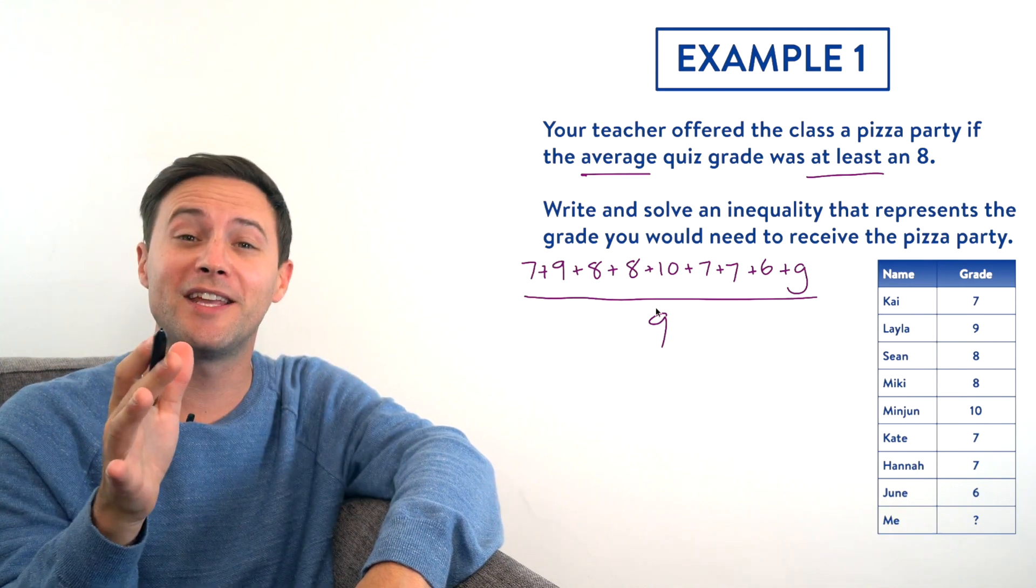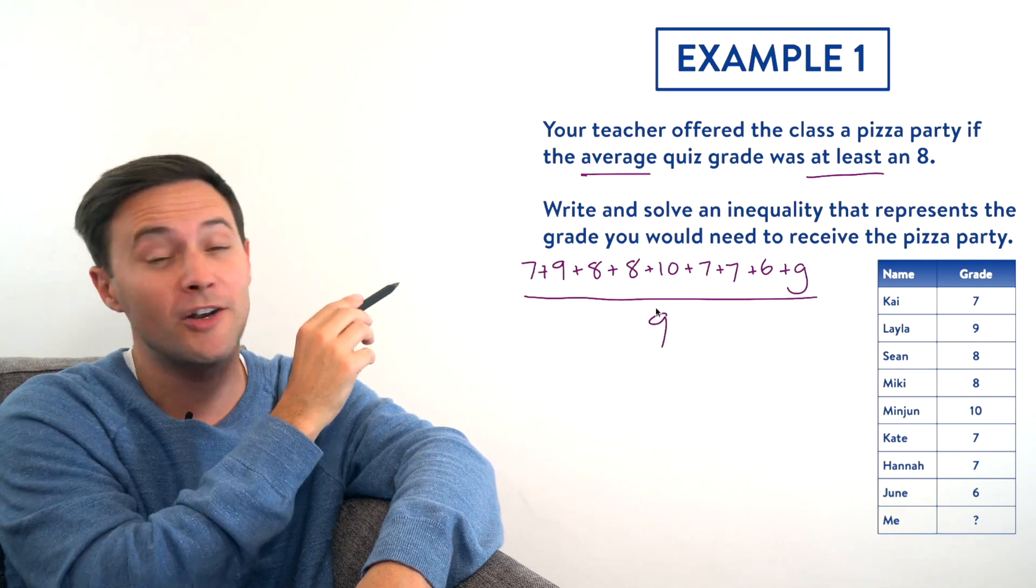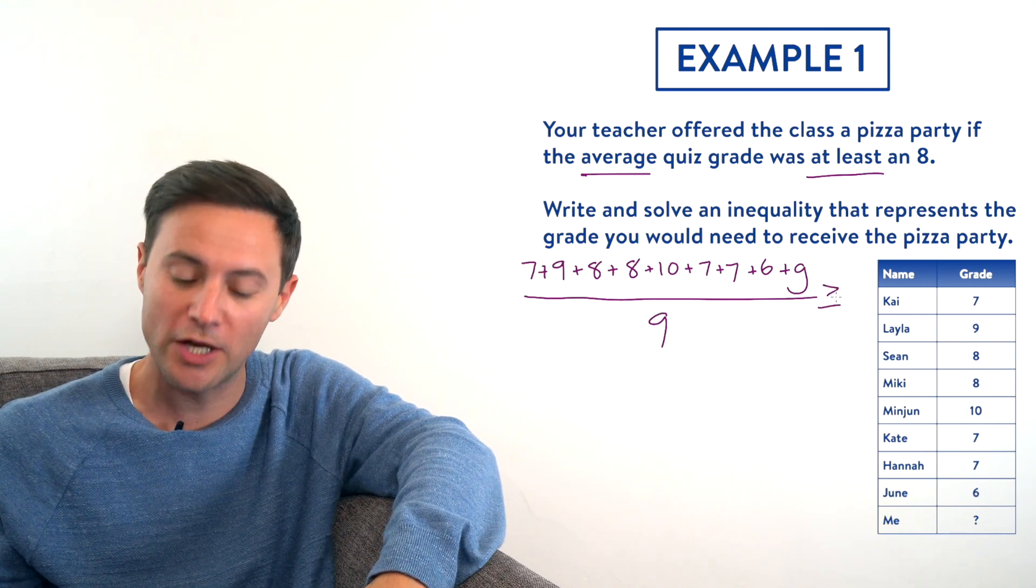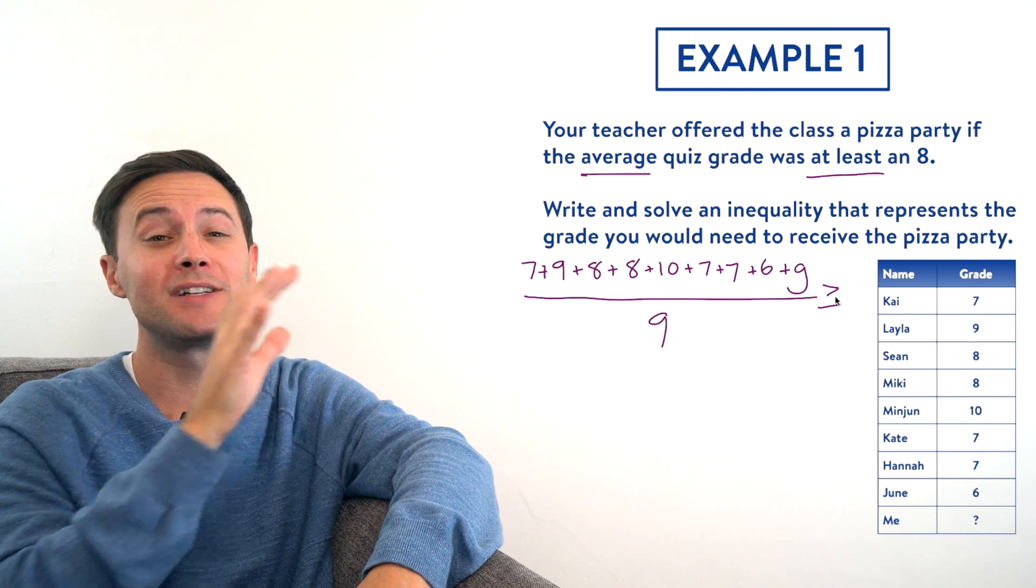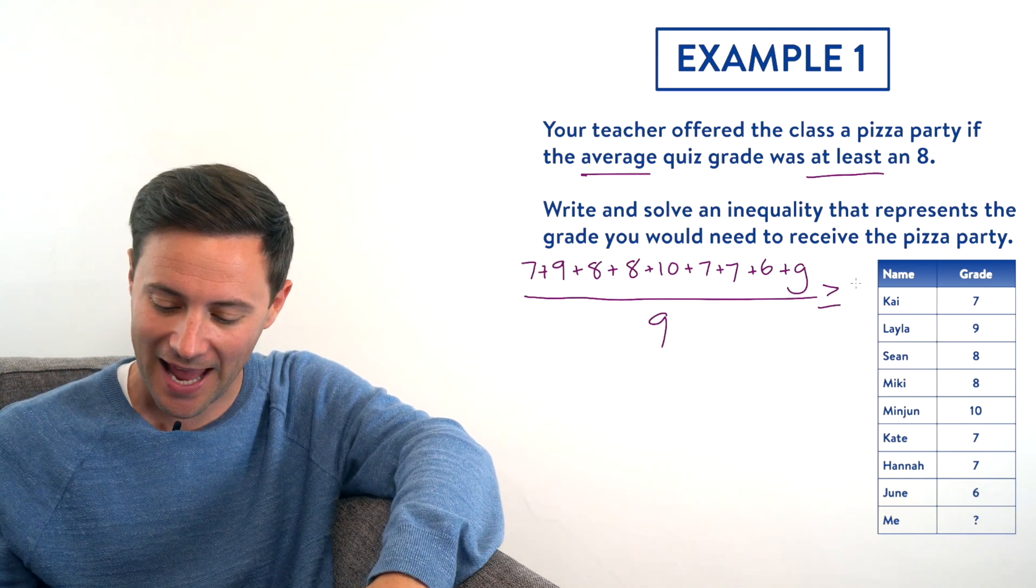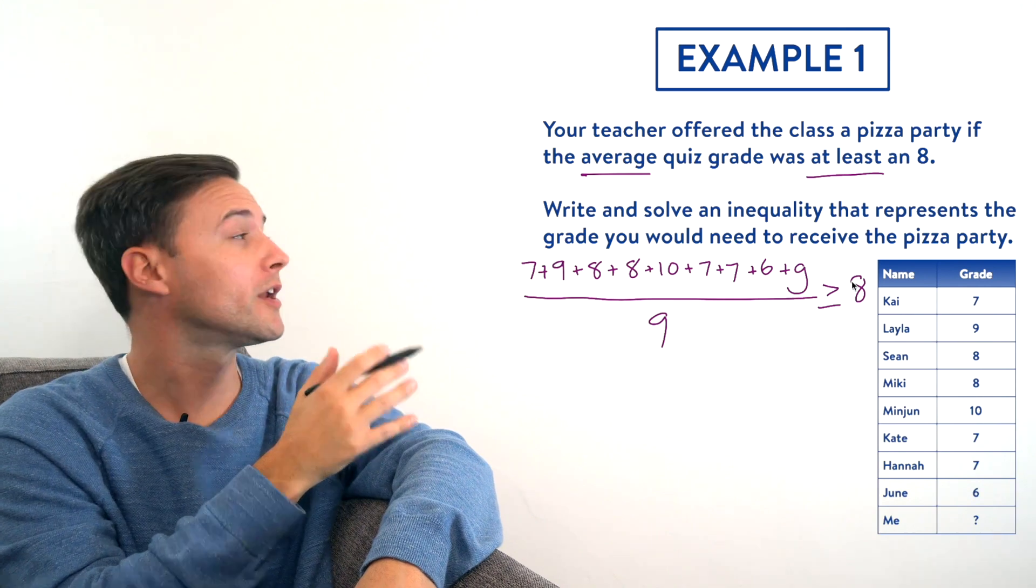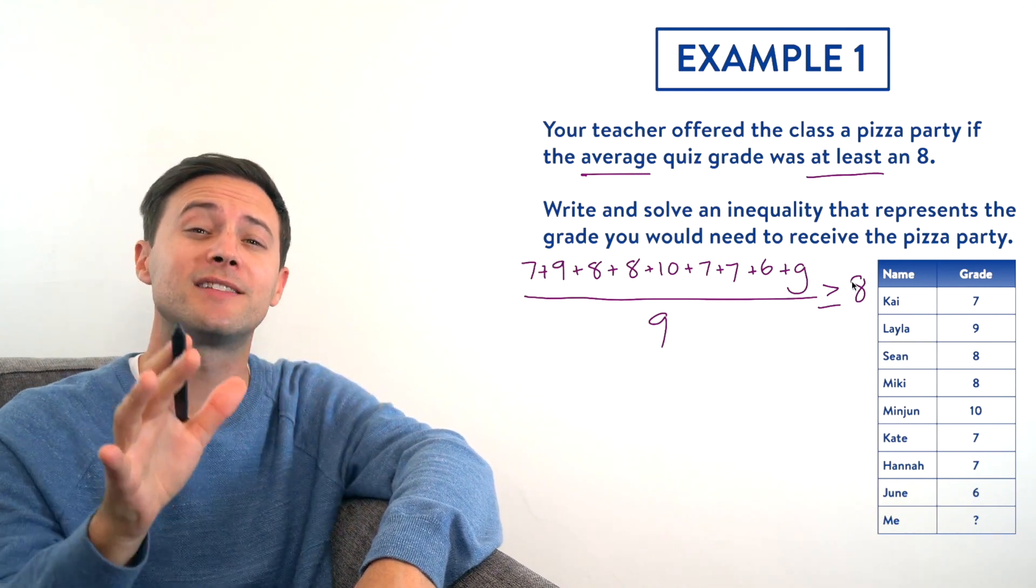Now let's write the inequality symbol. Remember we underlined at least, and at least means greater than or equal to, and the average needs to be at least an 8. So greater than or equal to 8. That's what the inequality should look like at the start. Now let's simplify it.